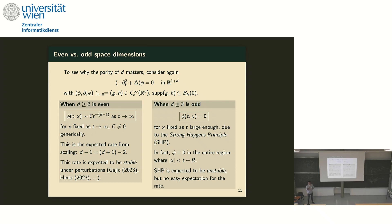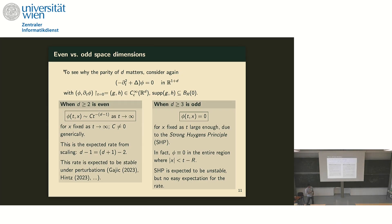This rate d-1 can be anticipated from scaling — you have a second-order equation in a d+1 dimensional space, so by scaling the behavior should be t to the minus (d-1), exactly the same way you read off the decay of the Newtonian potential from the Laplace equation. This rate is expected to be stable under perturbations of the equation. However, when d is odd, the fundamental solution is very different because of the strong Huygens principle — it is supported only on the boundary of the future light cone, not the interior. As a result, if you start from compact initial data, phi actually eventually becomes zero at a fixed x as t goes to infinity.